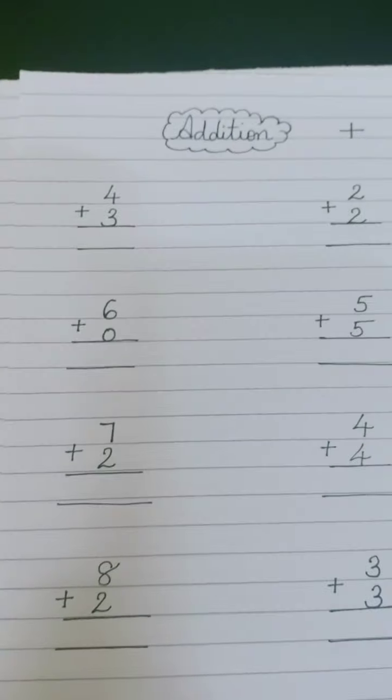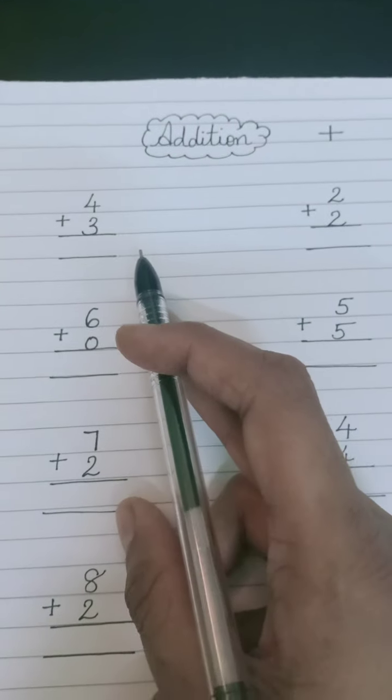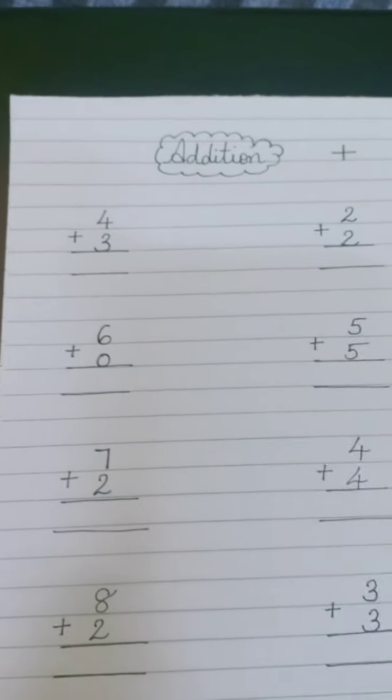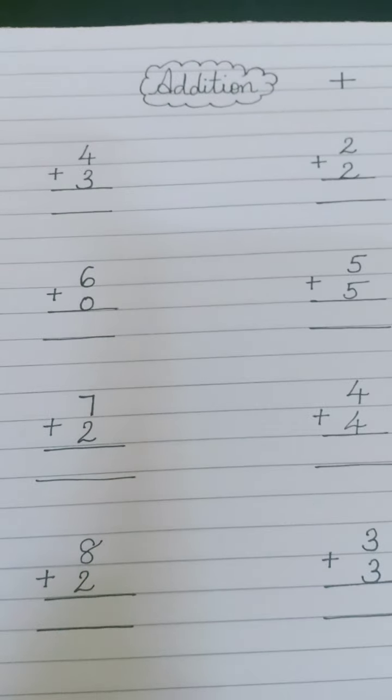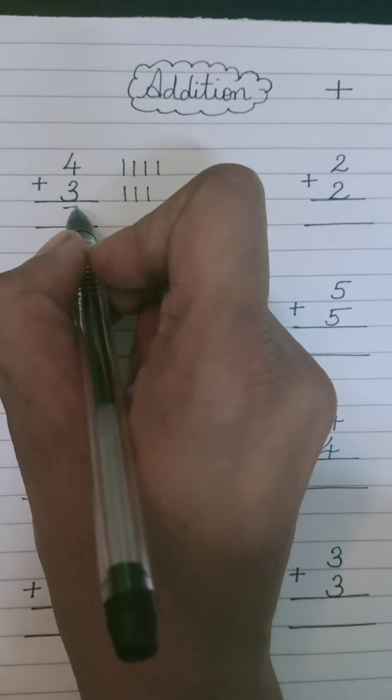Lekin KG ke baad, first standard onwards, we need to teach them mind calculation and finger counting. This helps them become independent from line method. Now let me demonstrate: Four is written here, so we will draw four lines - one, two, three, four. Then we have number three, so we will draw three lines. Now you will add all the lines together: one, two, three, four, five, six, seven. So we got the answer seven.